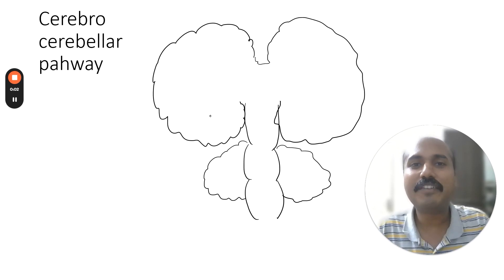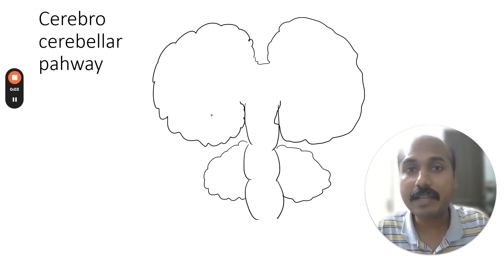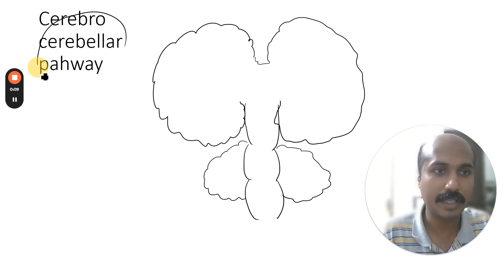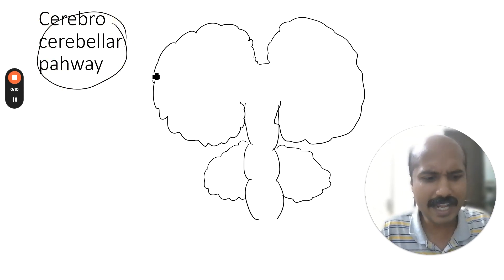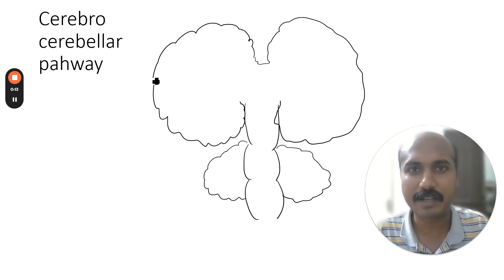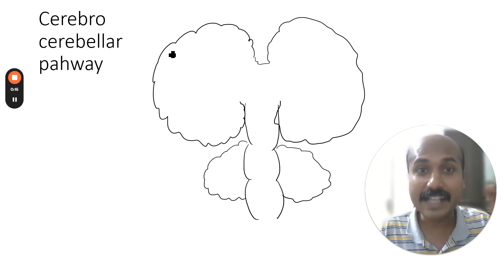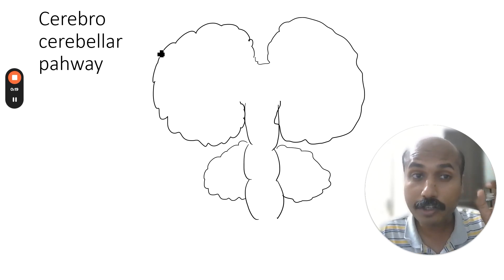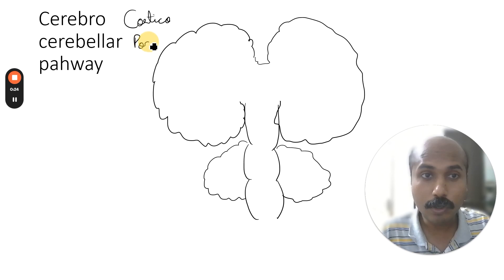Hello all, today we will learn about a very important pathway. This pathway is called the cerebro-cerebellar pathway. But the name is actually a misnomer — it is actually not cerebro-cerebellar. It is cerebro-ponto-cerebellar, also called cortico-ponto-cerebellar. That is the proper name.